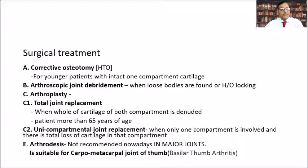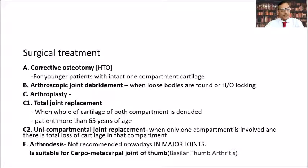Surgical treatments include corrective osteotomy, arthroscopic joint debridement, and arthroplasty — either total joint replacement or unicompartmental joint replacement — as well as arthrodesis. Corrective osteotomy is suited for young patients where one compartment is intact. Arthroscopic joint debridement is indicated when loose bodies are found on X-ray or there is a history of locking. Total joint replacement is done when all three compartments are involved and the cartilage of both compartments is denuded.